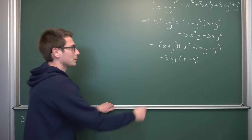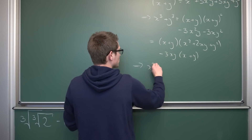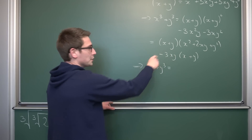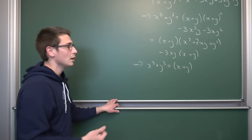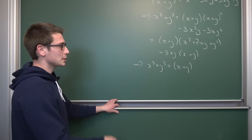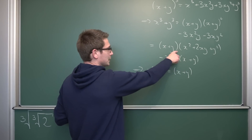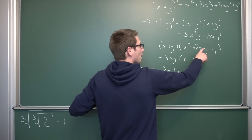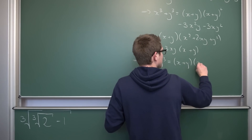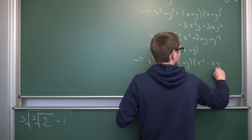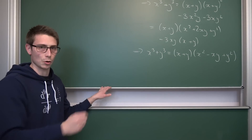Since (x+y) is a common factor on both terms, we can factor it out. Leaving us with x³ + y³ = (x+y)(x² − xy + y²). You can also verify this via polynomial division. This is a nice way to derive the formula for the sum of two cubes, and this is the first identity we are going to use.